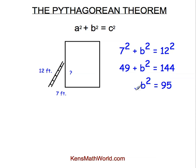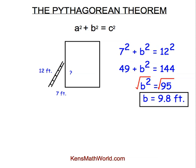And I'm ready to square root both sides. That eliminates the exponent. That undoes the exponent. Now, I'll have B by itself. And the square root of 95 is 9.8. So now I know that this missing side was 9.8 feet. So that tells me that the ladder extends 9.8 feet up the side of the building.